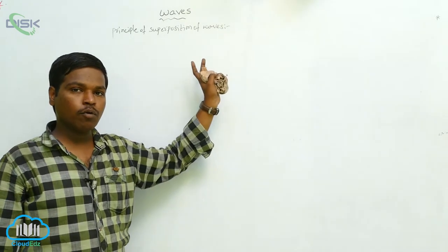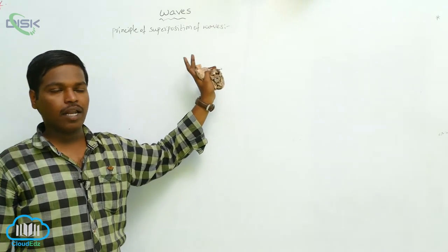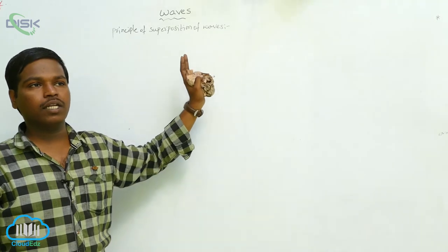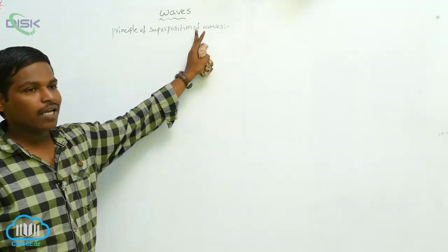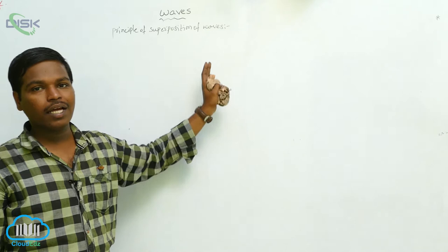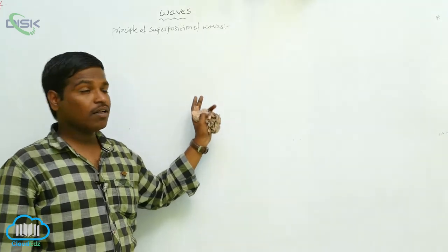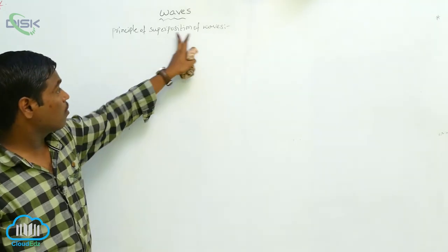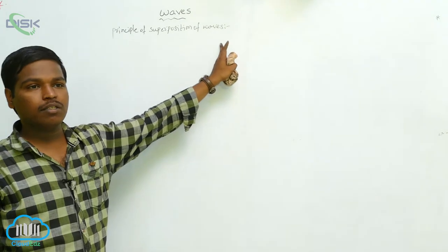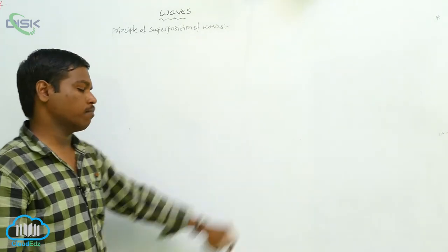When two or more waves travelling in a medium along the same direction or in the opposite direction superimpose on each other, the resultant displacement is the algebraic sum of the displacements.